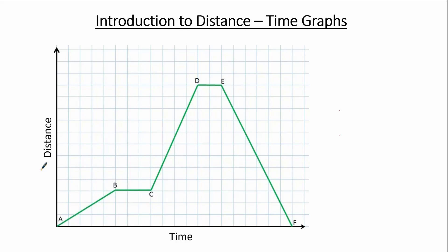Distance-time graphs typically represent journeys. On this journey we start at point A, located at the origin, and the first stage is A to B. During this stage we can see that the distance increases linearly with respect to time, which means that between A and B we are travelling with constant speed. Another way of saying this is that between A and B the acceleration equals zero — a very important point.